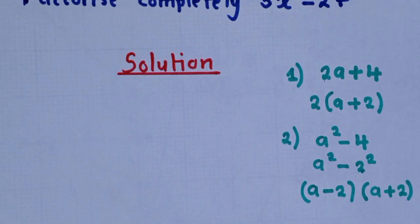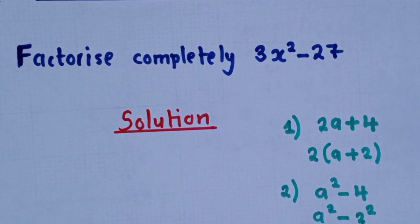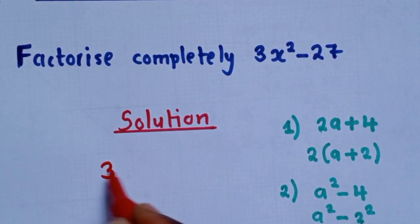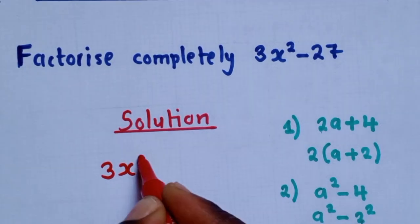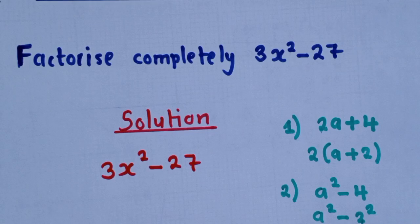So now, let's see how we can apply all these two ideas to answer our question here. So we shall say, 3x power 2 minus 27.